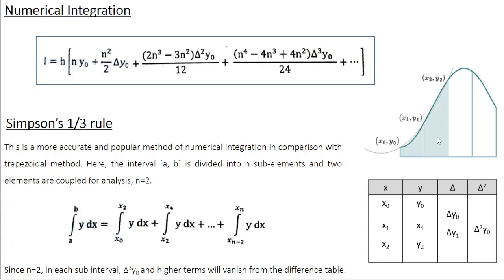Let us consider the first two subintervals. We couple these two subintervals together, so we have three points: x0 y0, x1 y1, x2 y2. In the trapezoidal method, we connected these points using a straight line. But here, let us look at the difference table. Since we have three points, this is the difference table: y0, y1, y2. We consider the first difference terms delta y0 and delta y1, and the difference between these two gives the second order difference delta squared y0.